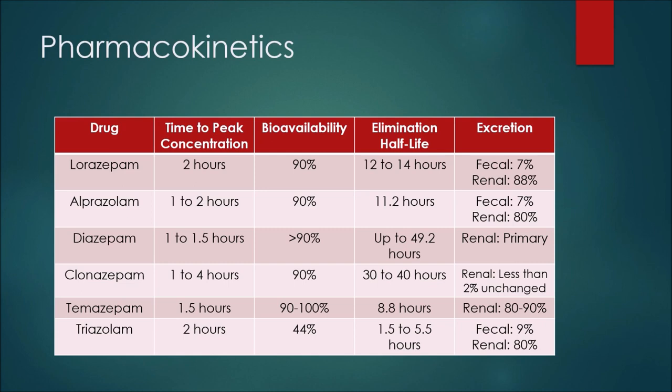Finally, with triazolam, the time to peak concentration would be two hours. Bioavailability is 44 percent — this is the first one on the list that is not very bioavailable. All the other ones were at or above 90 percent, whereas triazolam is at 44 percent. The elimination half-life is also very short — the shortest of all these benzodiazepines — listed between 1.5 and 5.5 hours, so this medication would be out of your system much more quickly than the others.